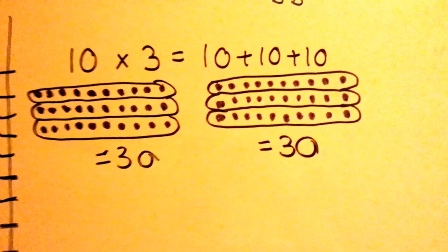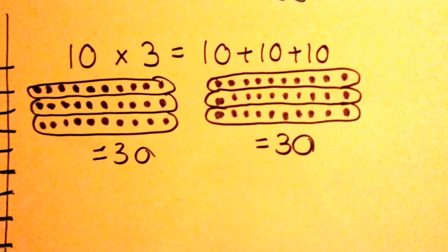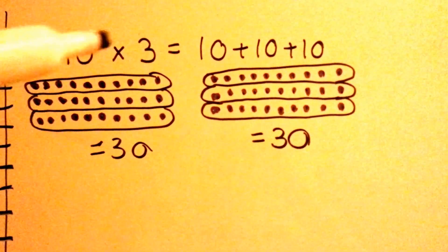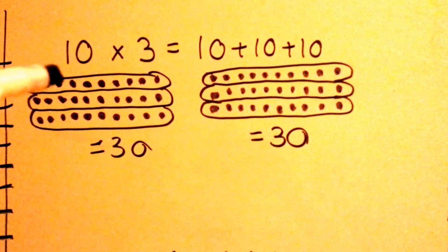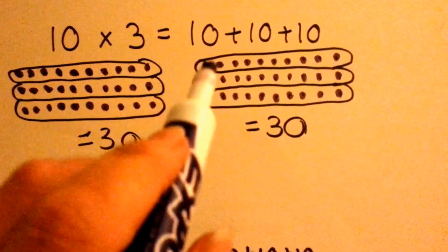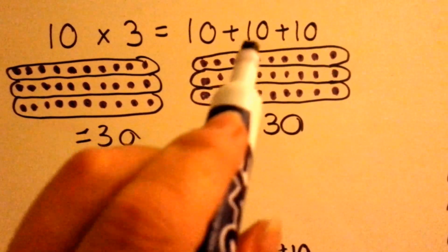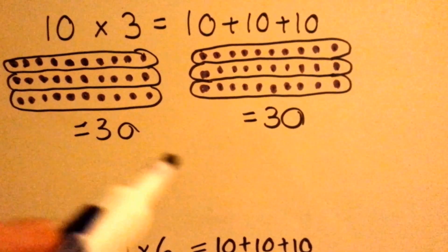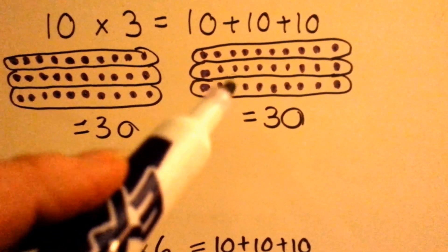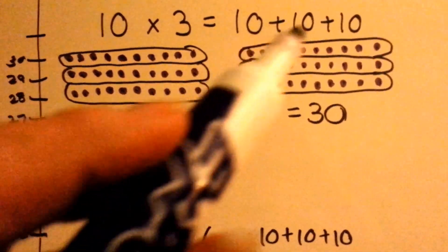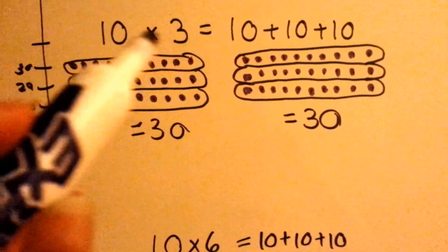Here's the 10 times table. 10 times 3 means we have a 10 three times: 10, 10, and 10. It's the same thing as saying 10 plus 10 plus 10. 10 times 3 is 30, and 10 plus 10 plus 10 is 30. We have a 10 three times — that's how many times we had the 10.